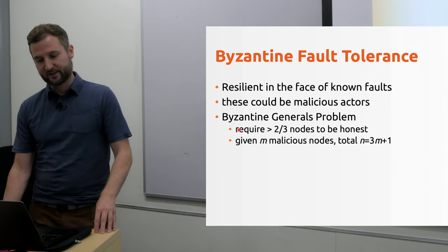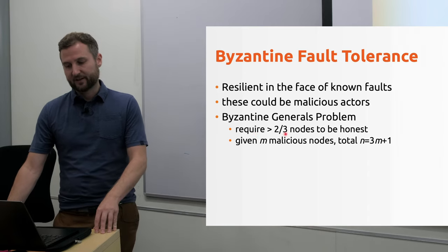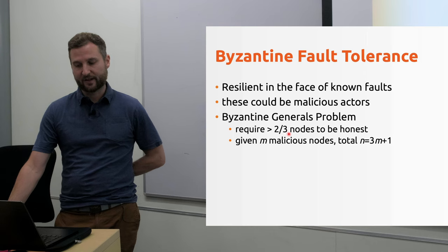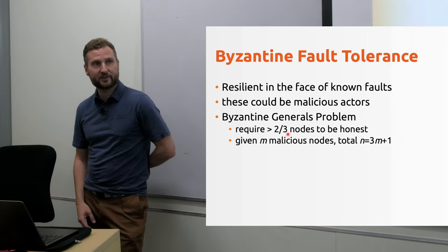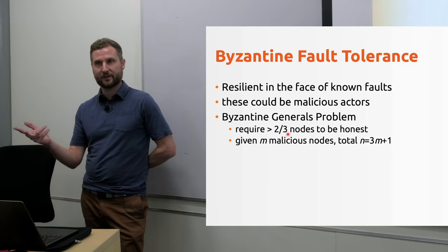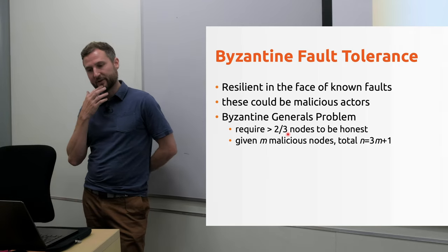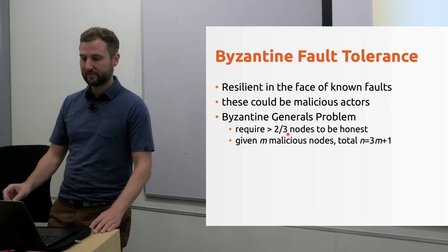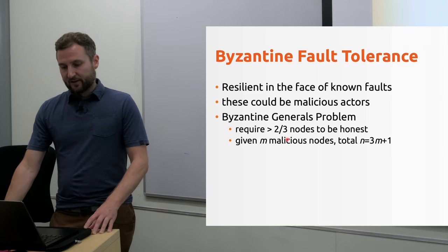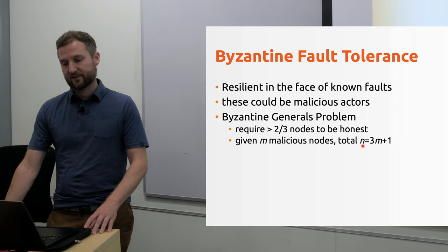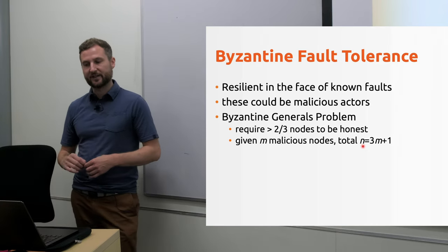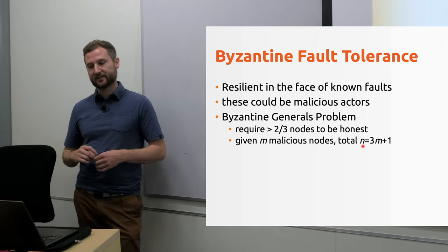This result here is from the Byzantine generals problem. Some computer scientists did some math on the networking problem and decided, came up with two thirds. So we need two thirds to be honest. Two out of three nodes have to be telling the truth. Two out of three messengers have to come back honestly. Given M malicious nodes, the total nodes we need are 3M plus one.